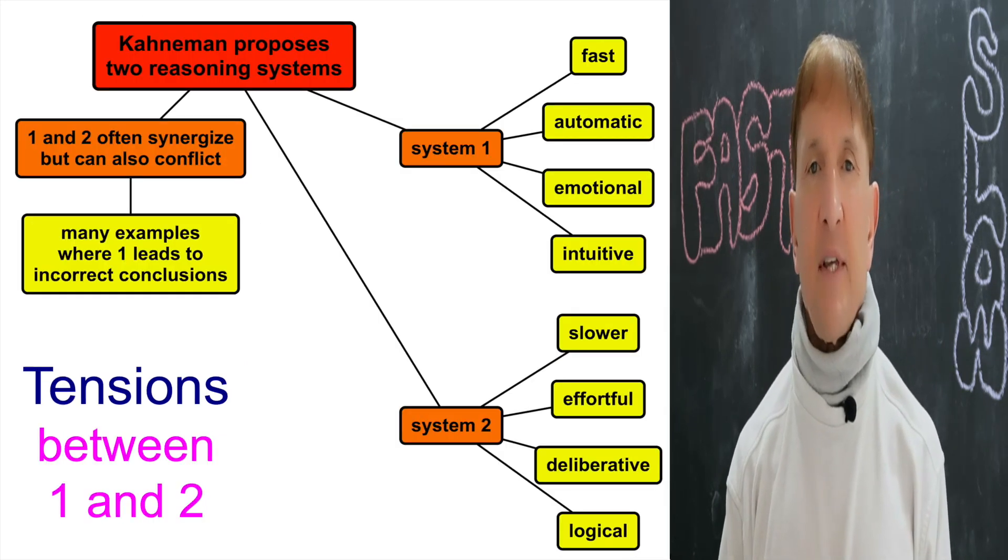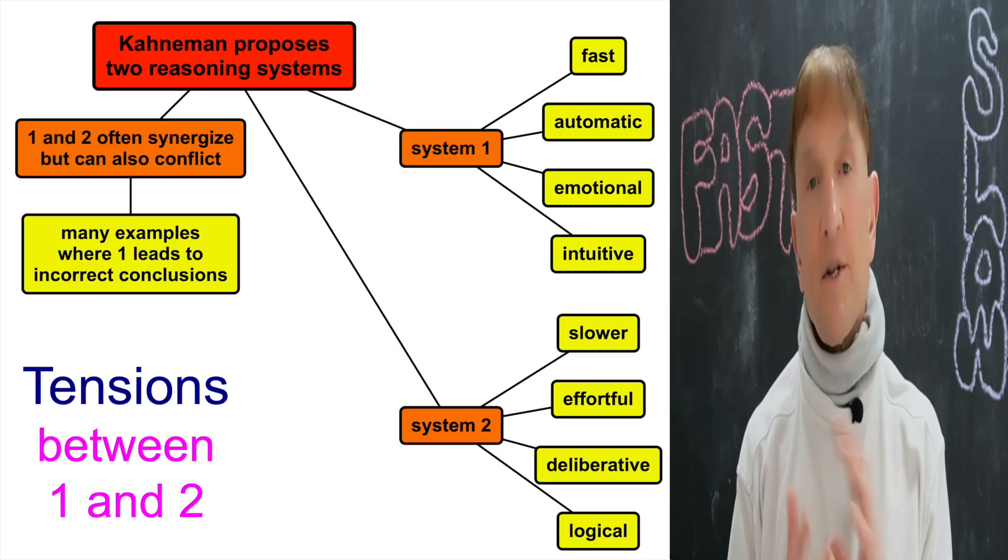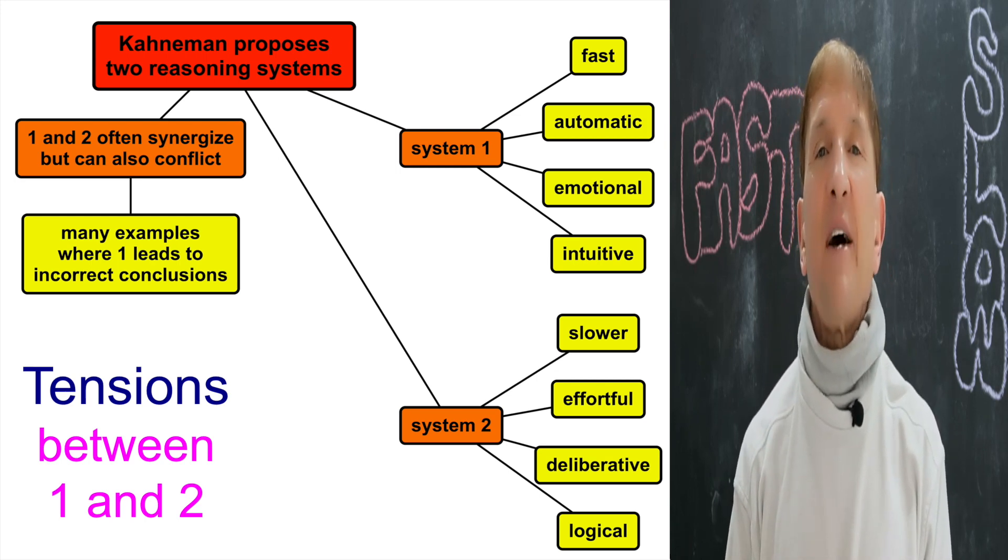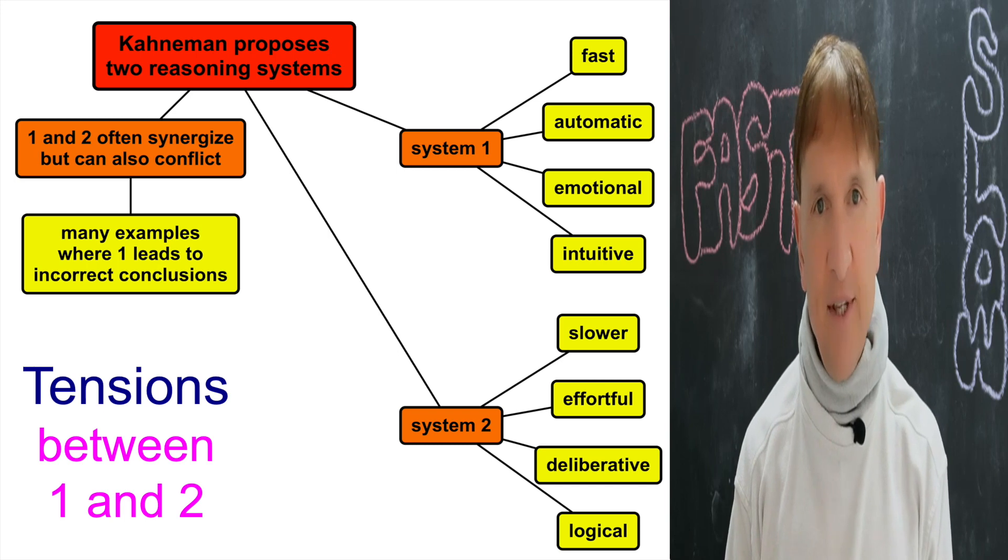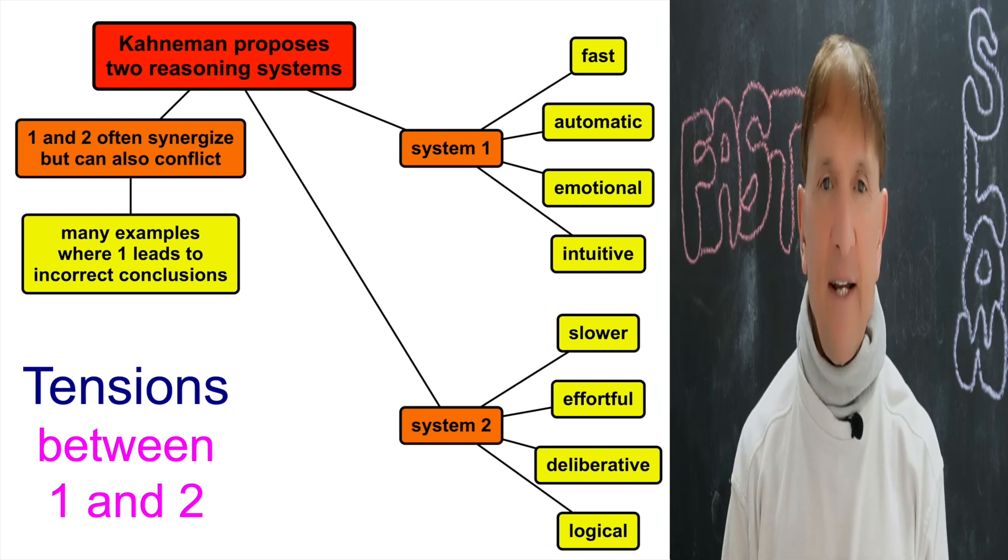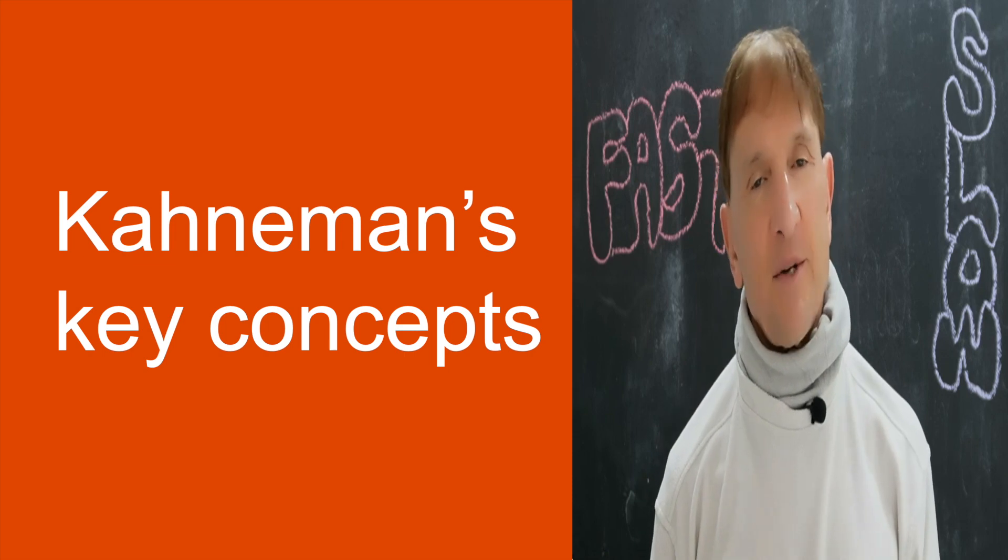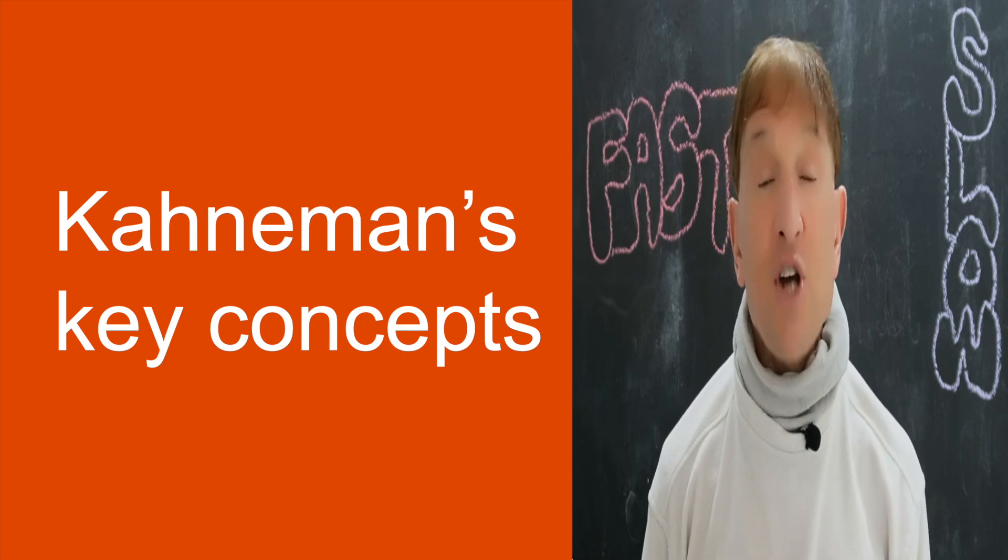Kahneman's book really argues that System 1 and System 2 work together in harmony most of the time, but sometimes there's a tension between them, and they lead us astray. To explain this, he uses a lot of terms, and I'd like to go through the jargon.